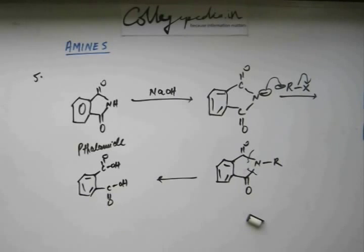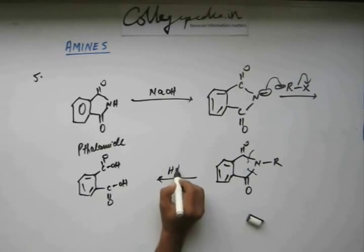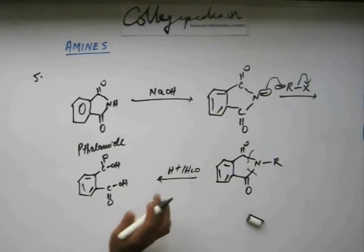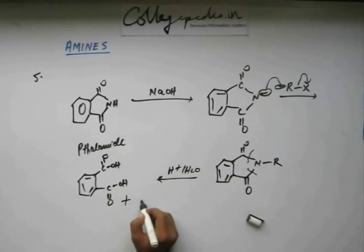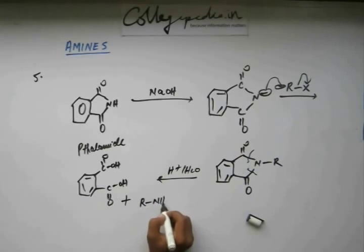If you are carrying out base-catalyzed, then these H+ will not remain on the acid because the system would be basic. These will be in the form of carboxylate ion. Otherwise, suppose if you are carrying out acid-catalyzed hydrolysis, this is phthalic acid and we are going to get this 1° amine.